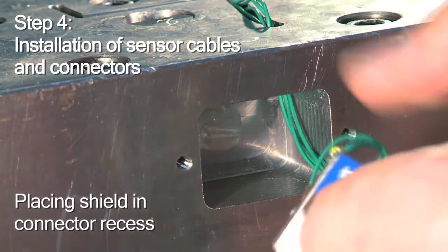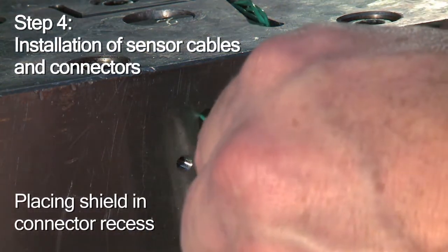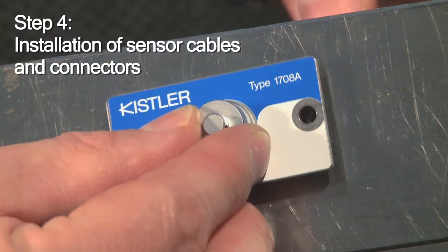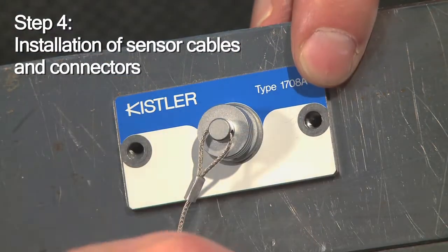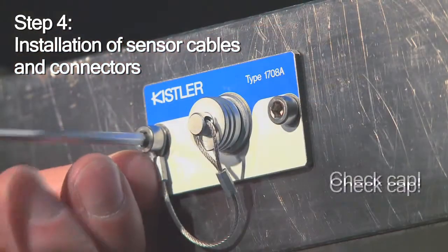All you have left to do is carefully arrange the cables, place the connector in the recess, and screw it on. Make sure the cap is installed too.